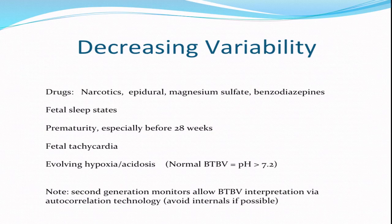When you have minimal to moderate beat-to-beat variability, in most cases you can be assured that the pH of the fetus is probably 7.2 or greater. You'll occasionally hear discussions about whether variability can be assessed by external monitors — and as long as you're using a second-generation monitor, which most monitors today are, you can interpret beat-to-beat variability externally. This is due to modern computer processors using a technique called autocorrelation, which makes the R-R interval between each heartbeat accurate and allows the calculation of variability.